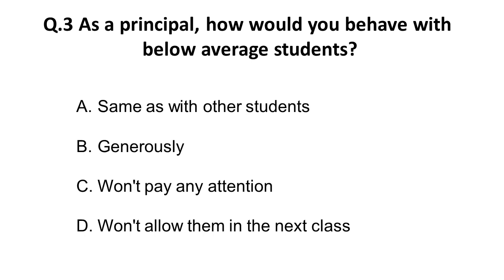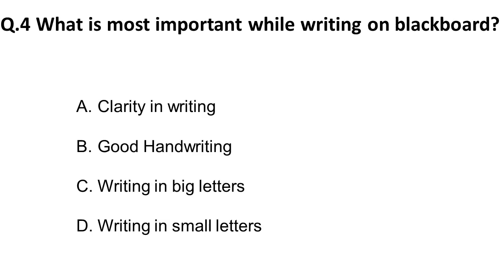Moving on to the third question: as a principal, how would you behave with below-average students? For below-average students you need to be generous — meaning you have to give them extra attention. They may not catch up with what you are saying; you don't have to get angry. You have to put a little extra effort to make them understand. So the answer is that you should be generous towards below-average students.